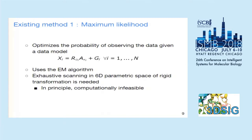Our method is motivated by the limitations of existing methods. There are two major approaches. The first is the maximum likelihood based method, which optimizes the probability of observing the entire subtomogram data given a data model. This model defines the subtomogram X as the rigid transformation of the true structure A plus Gaussian noise. This method uses the expectation-maximization algorithm for updating parameters and requires exhaustive scanning in 6-parameter rigid transformation space, which is computationally infeasible in principle.